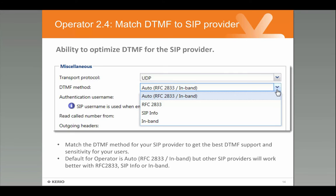Some SIP providers work a little differently than others, and we've added the ability to fine-tune some of those things. For example, you can adjust the DTMF method — what happens when key presses happen on the phone. By default, Operator supports the DTMF method RFC 2833 in-band, but some providers will work a lot better if you match the DTMF method to the one they specifically require, such as SIP info or in-band. We've also added the ability to adjust audio gain control for telephony devices.